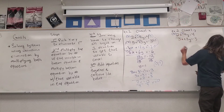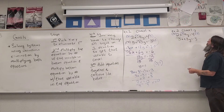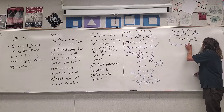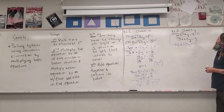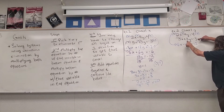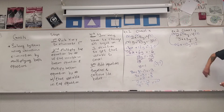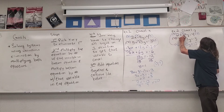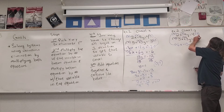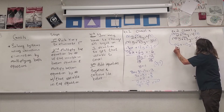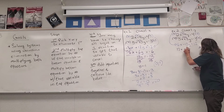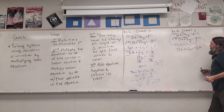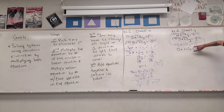So the top equation gets multiplied by 3: 3 times everything gives me 6x minus 12y equals 12. I got the 3 from the bottom equation because that's who is with y. Now I multiply everyone in the bottom equation by 4 because that's who's with y in the top equation. Everybody gets a 4. I get 12x plus 12y equals negative 12.